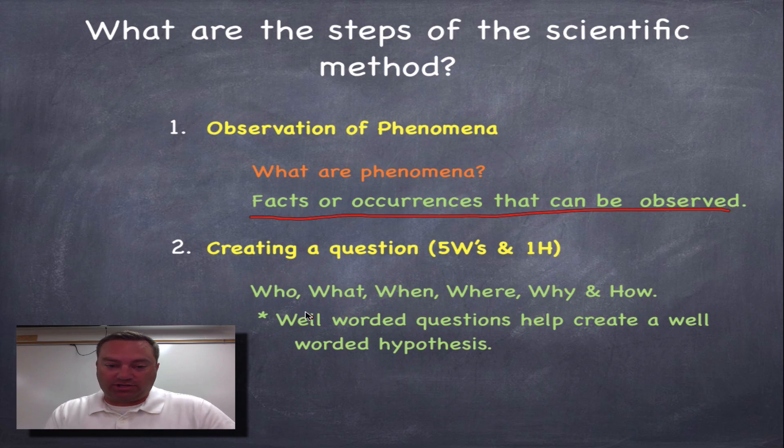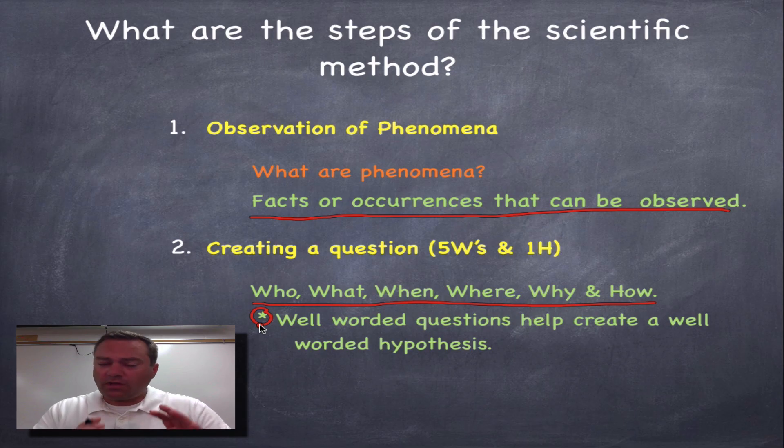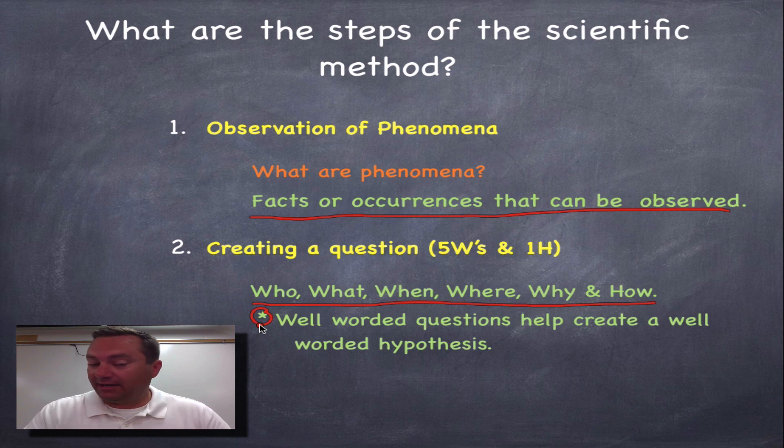The C means create a question. When you create a question, you're going to use the five W's and the one H: the who, what, when, where, why, and how. You see this little asterisk right there? A very well-worded question will create a really, really good hypothesis. And a really good hypothesis is a major step in creating a very nice and elegant experiment.